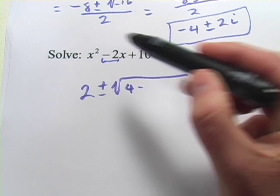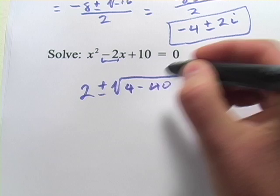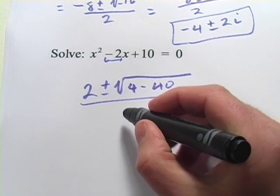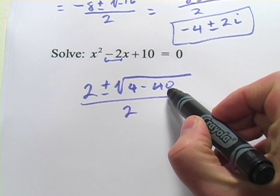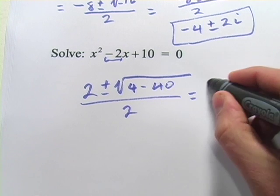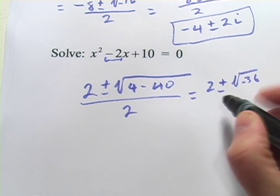Minus 4ac. a is 1, c is 10. So 4 times 1 times 10 is 40. That's all over 2a. a is 1, so that's just 2. 4 minus 40 is negative 36. So this is 2 plus or minus square root of negative 36 over 2.